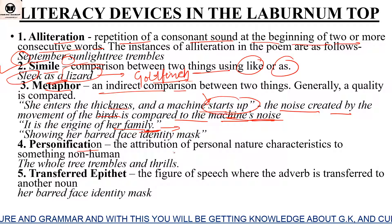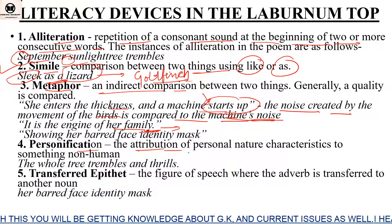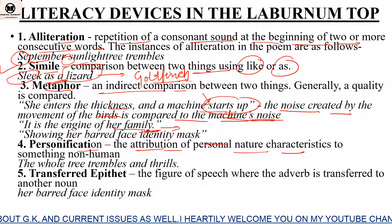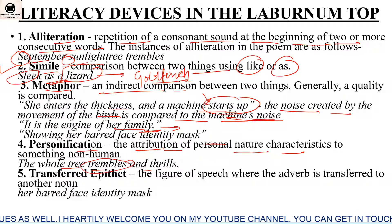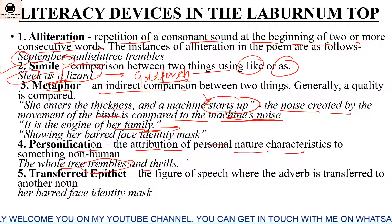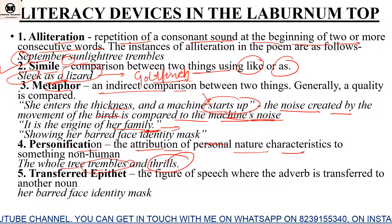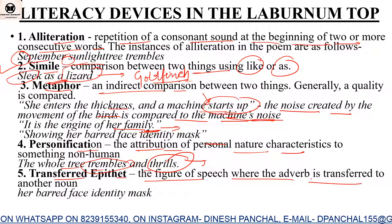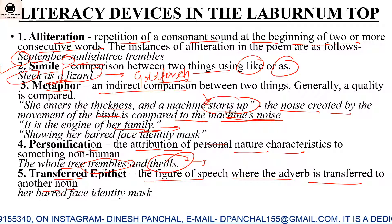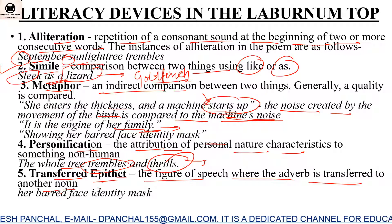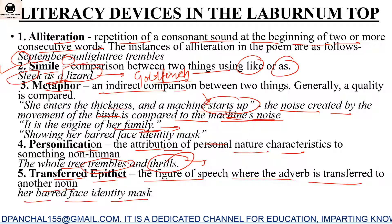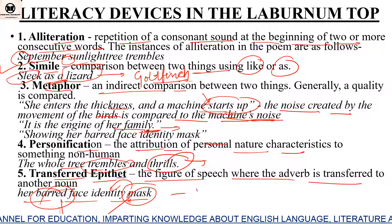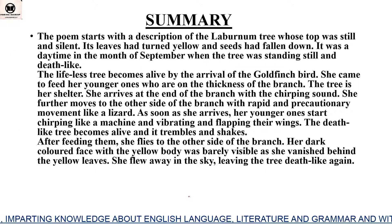Personification means attributing human qualities to a non-living object. 'The whole tree trembles and thrills' — a tree does not tremble or feel thrills; it is humans who tremble and feel excitement. But here human qualities have been given to the tree — so this is personification. Transferred epithet is a figure of speech where an adjective is transferred to another noun. In 'her beard face identity mask', 'beard' (stripy) should apply to 'identity' but is transferred to 'face/mask' — so this is a transferred epithet.